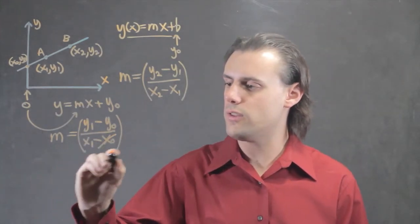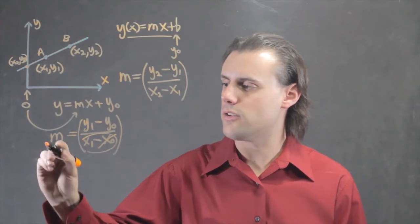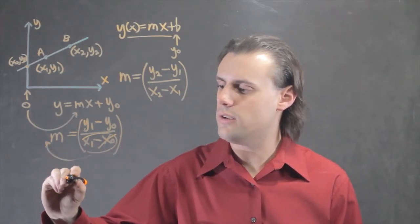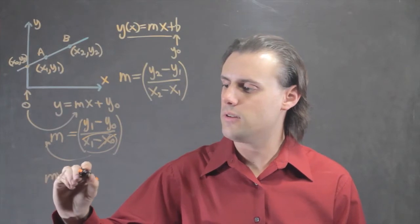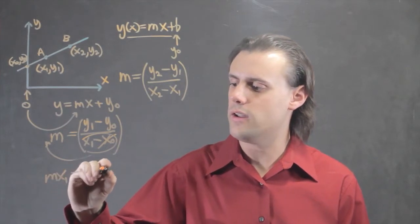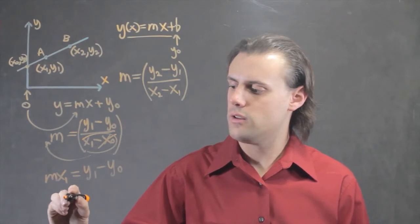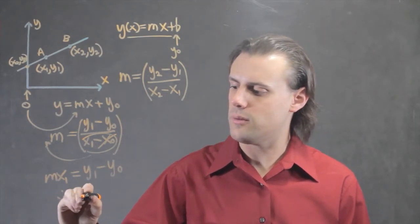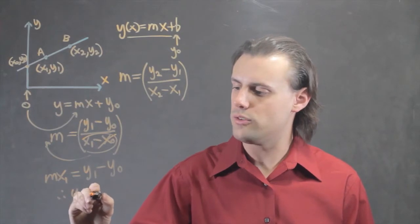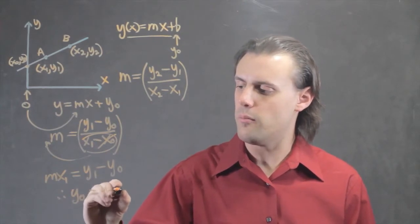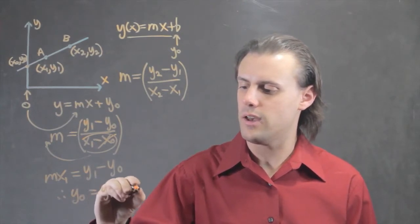So, moving the denominator to the other side, I have x1 times m is equal to y1 minus y0. Therefore, my y-intercept will simply be equal to y1 minus m times x1.